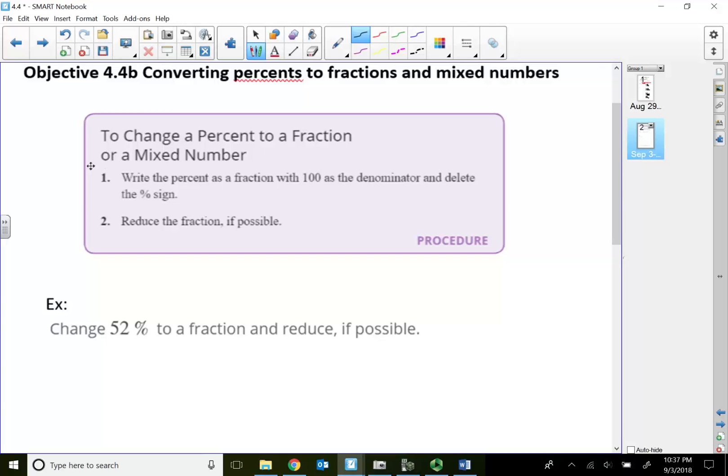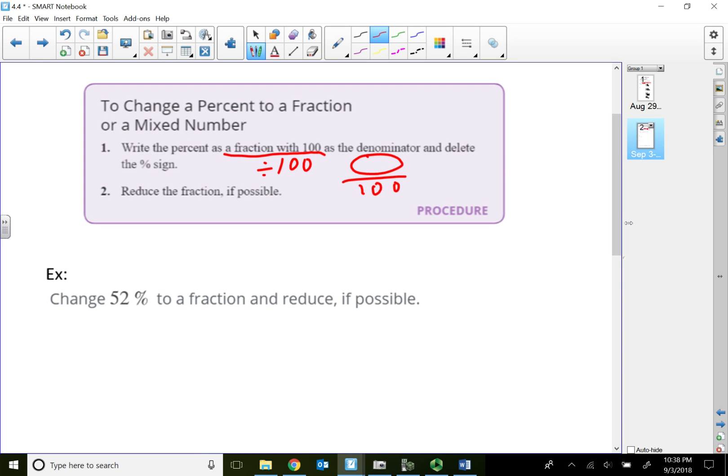So to change a percent to a fraction or a mixed number, we will write the percent as a fraction with 100 as the denominator and delete the percent. So if I write my percent as a fraction with 100 in the denominator, that part is basically saying divided by 100, right? Some sort of percent over 100. So that's divided by 100. And we'll reduce the fraction if possible. So the textbook offers us how to do this by hand.